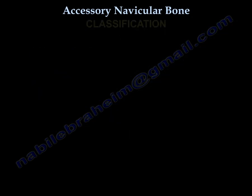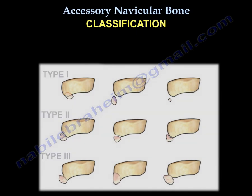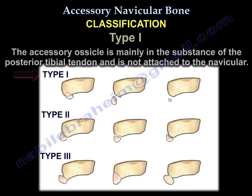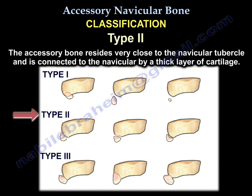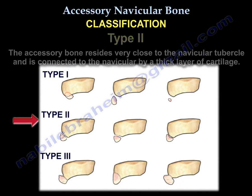The accessory navicular is classified into three types. In a type 1, the accessory ossicle is mainly in the substance of the posterior tibial tendon and is not attached to the navicular. In a type 2, the accessory bone resides very close to the navicular tubercle and is connected to the navicular by a thick layer of cartilage.